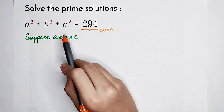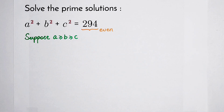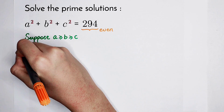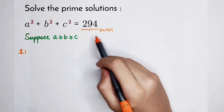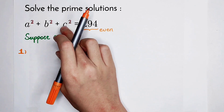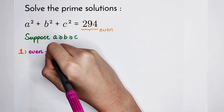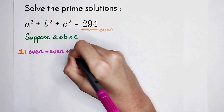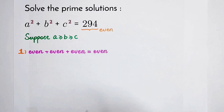Since the sum of a squared, b squared, and c squared is even, and a, b, and c are all prime, there are only two cases. The first case: an even number can be written as the sum of three even numbers. So in this case, a squared, b squared, and c squared are all even, which means a, b, and c are all even.